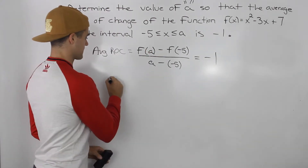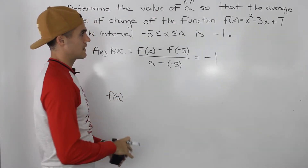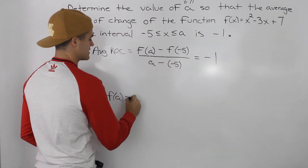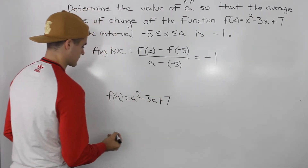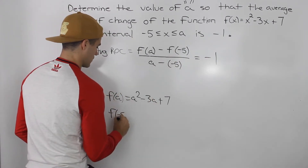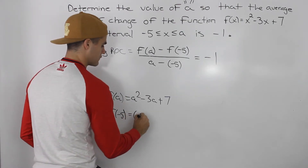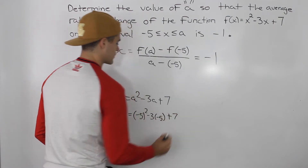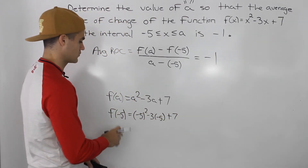So f(a) is going to be what? We have to plug in this a value for all of the x values in the function, so it's going to be a² - 3a + 7. What about f(negative 5)? We'll plug negative 5 for all the x values in the function, so we'll have (-5)² minus 3 times (-5) plus 7.